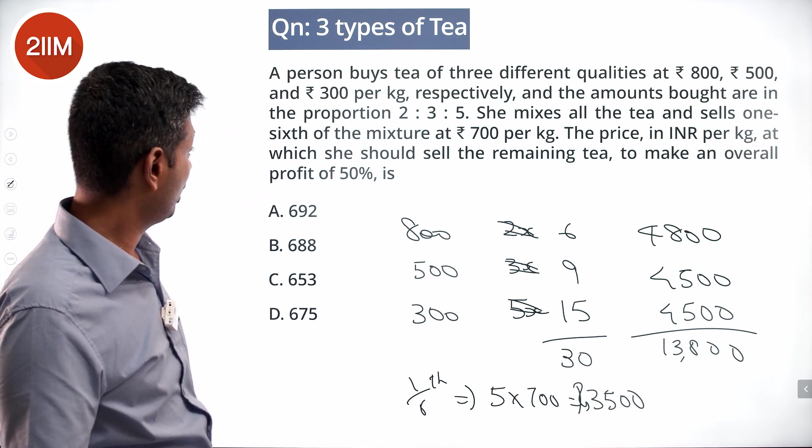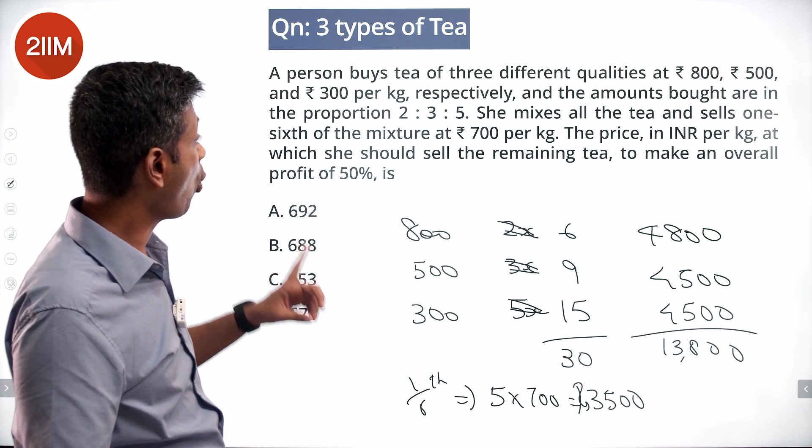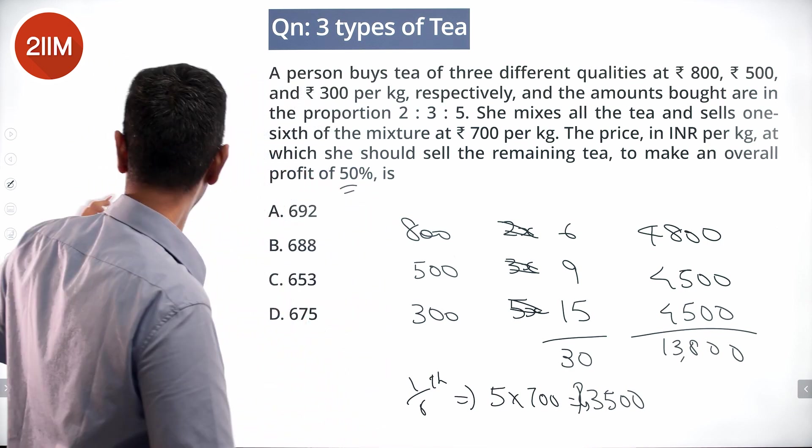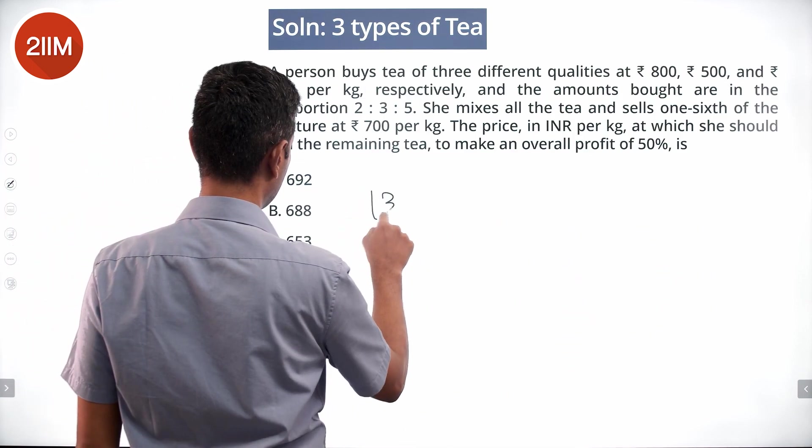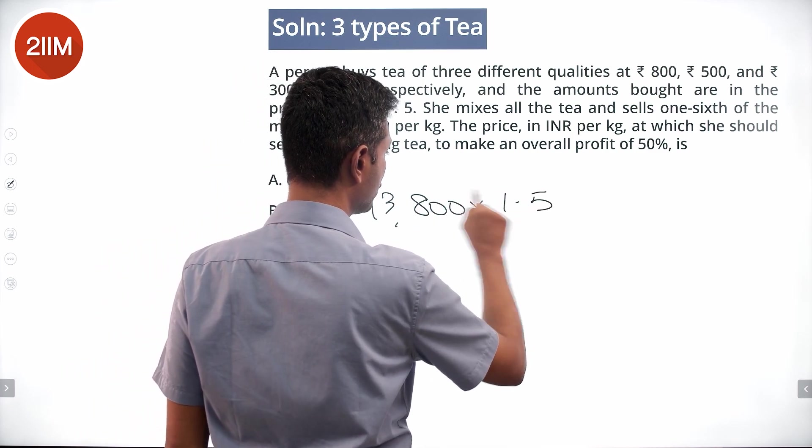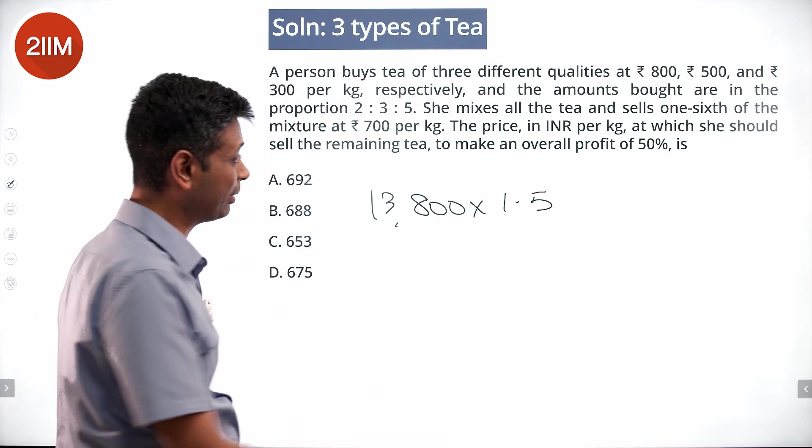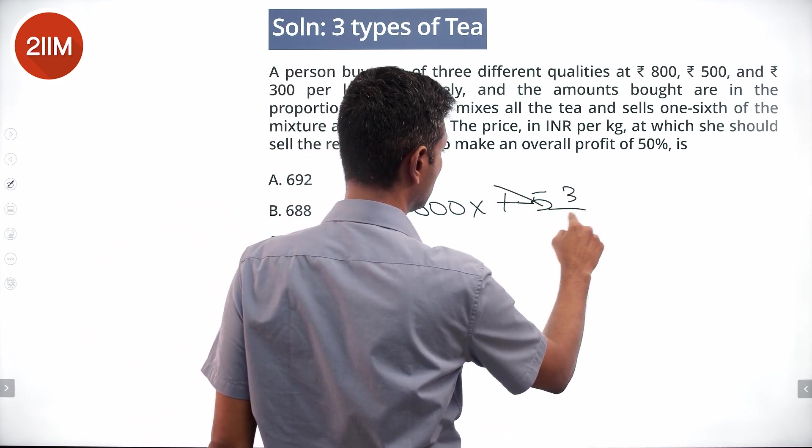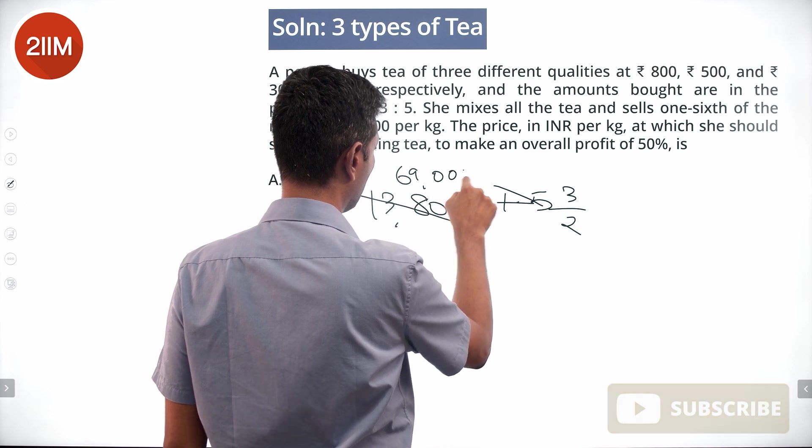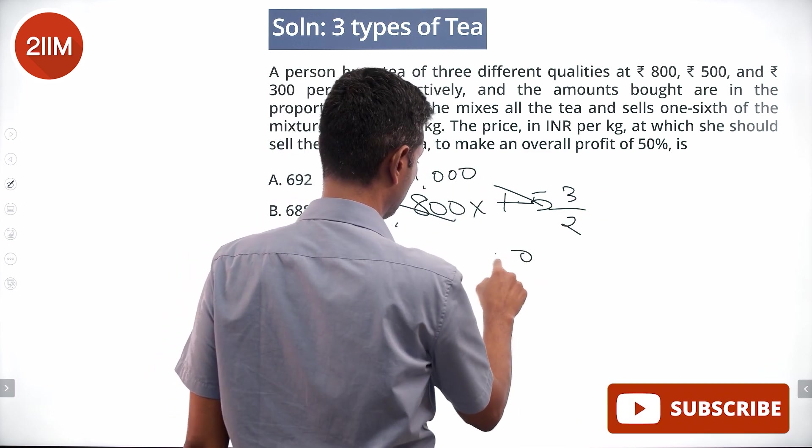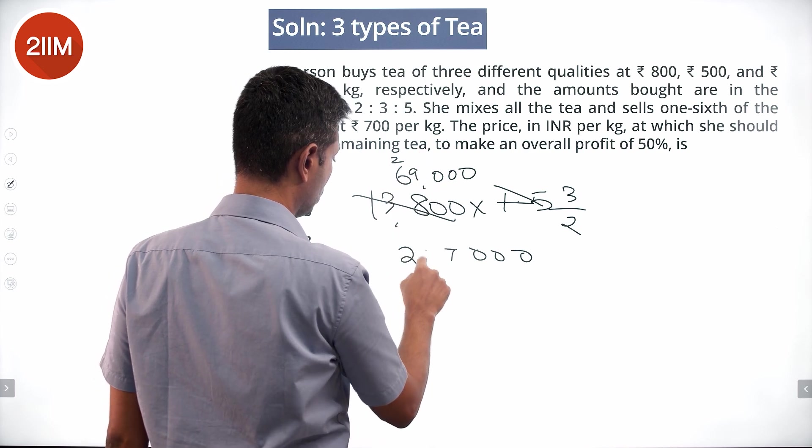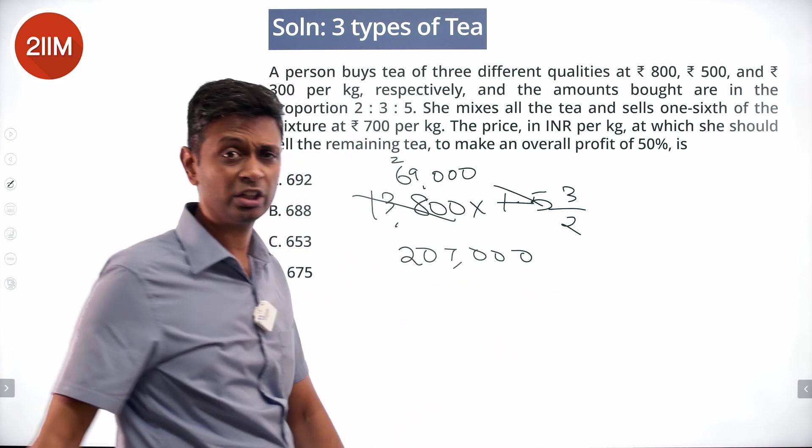What is the price per kg at which she should sell the remaining to make the overall profit of 50%? That means 13,800 into 1.5 she needs to make total, into 3 by 2. Let's find that number. This is 69,000 into 3. So 207,000 rupees she needs to make.